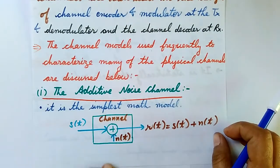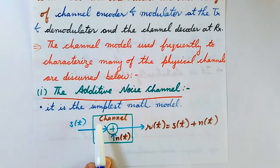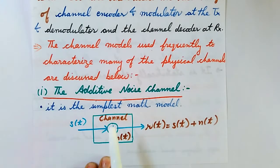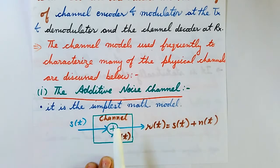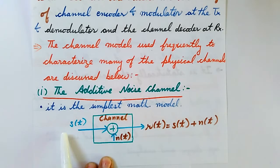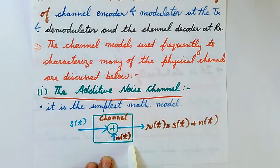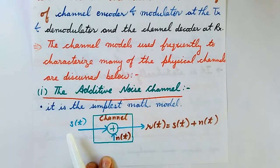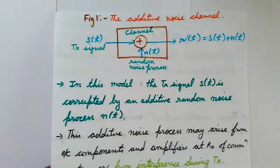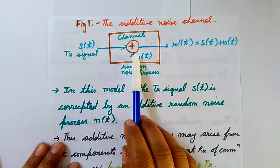As we can see in the block diagram, the channel is in the center — it is the medium through which the transmitter sends information from the source to the destination. On the left we have the transmitted signal S(t), and on the right we have the received signal R(t). Within the channel there is a noise N(t), which adds up to the transmitted signal and is sent to the receiver as a sum of the transmitted signal and the noise generated in the channel.